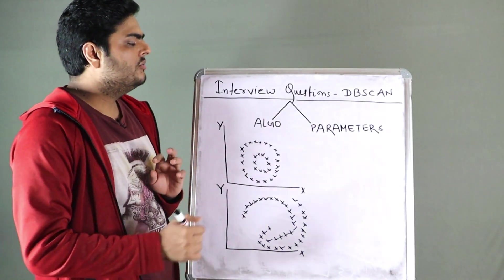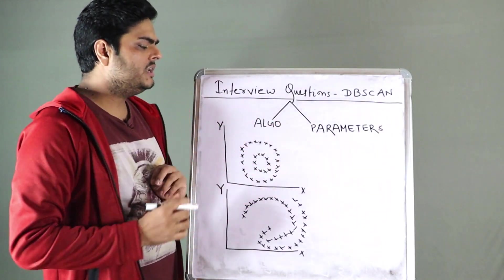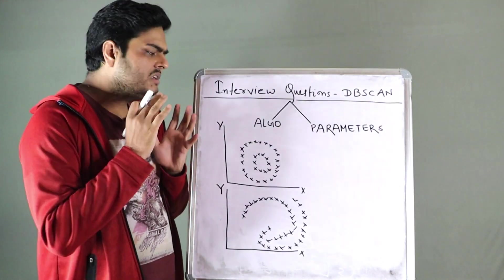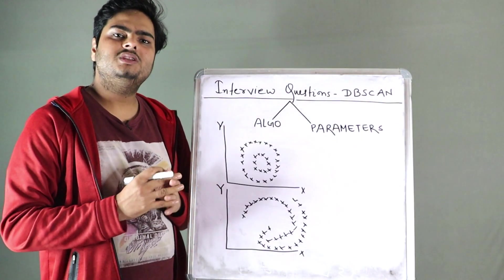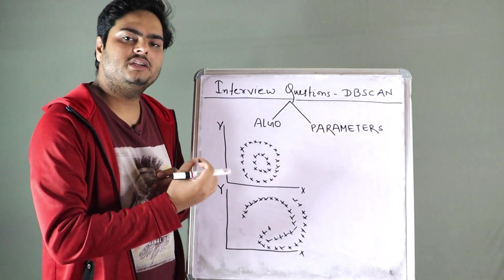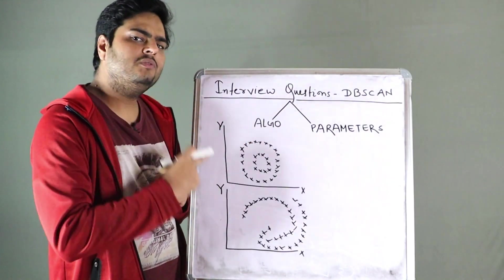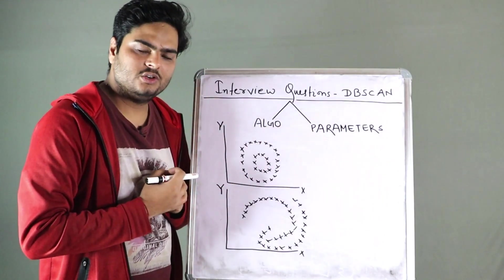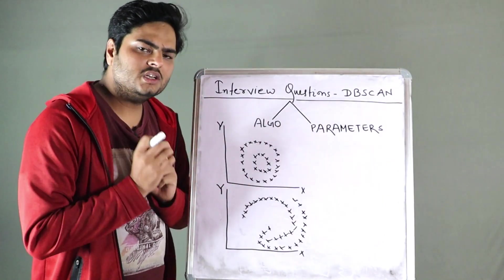So first of all, from the algorithm point of view, how DB scan clustering works. So it is a density based clustering which sees the nearest points in terms of density. I have created a detailed video on this application. The link is here. You can watch that video.